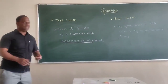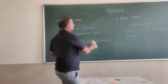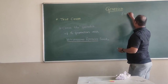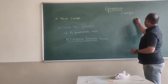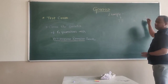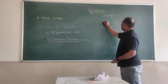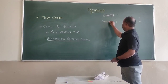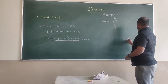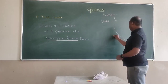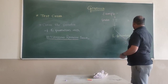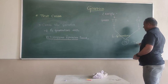Now we are going to move forward to an example of test cross. In test cross, we cross between two parents. Here we have the gametes, which will be segregated and they form the F1 gametes. In the F1 generation, the phenotype will be tall.